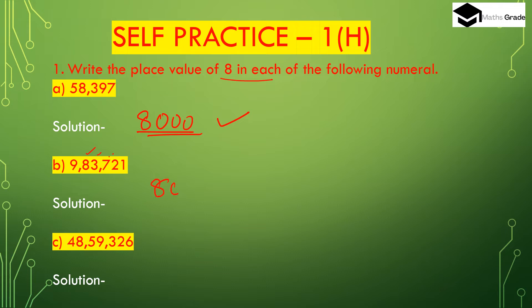The place value of 8 in part (b), 9 lakhs 83,721, is 80,000. For part (c), 48 lakhs 59,326: here the digit 8 is in the lakhs place — units, tens, hundreds, thousands, ten-thousands, and this is lakhs place. So the place value of 8 is 8 lakhs.